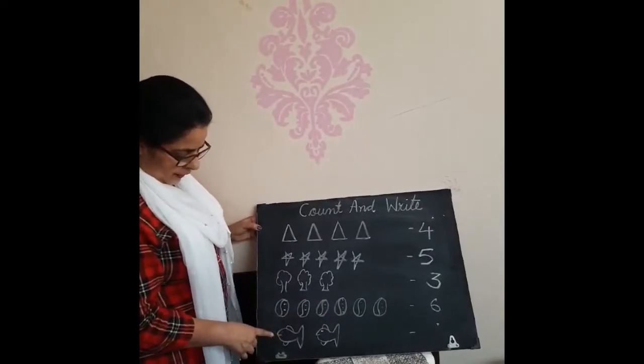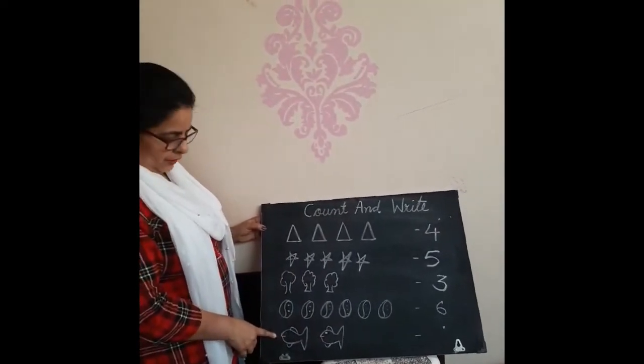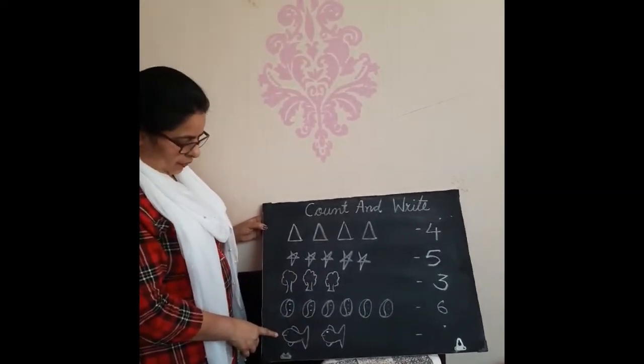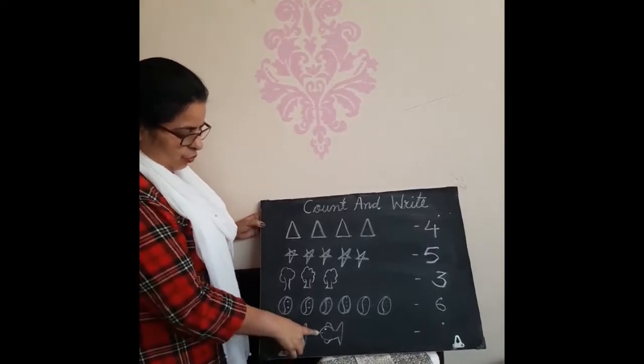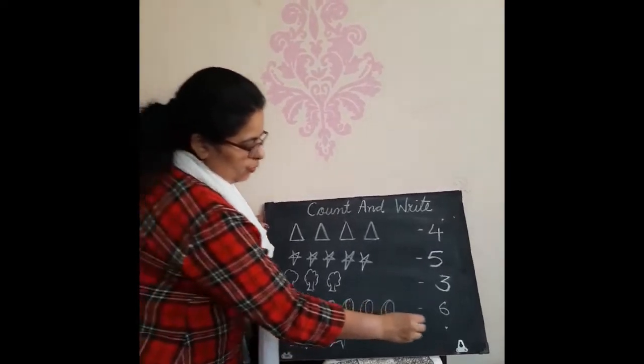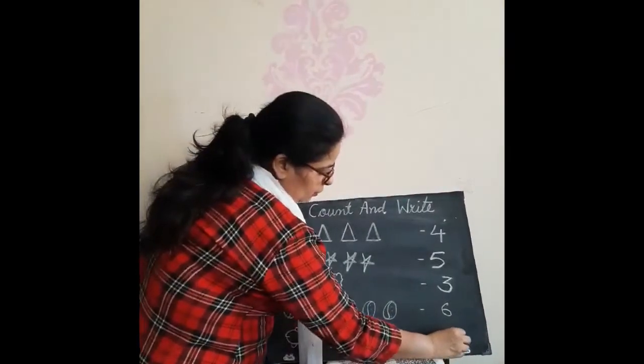What are these? These are fishes. Now count them. 1, 2. So write down here. 2.